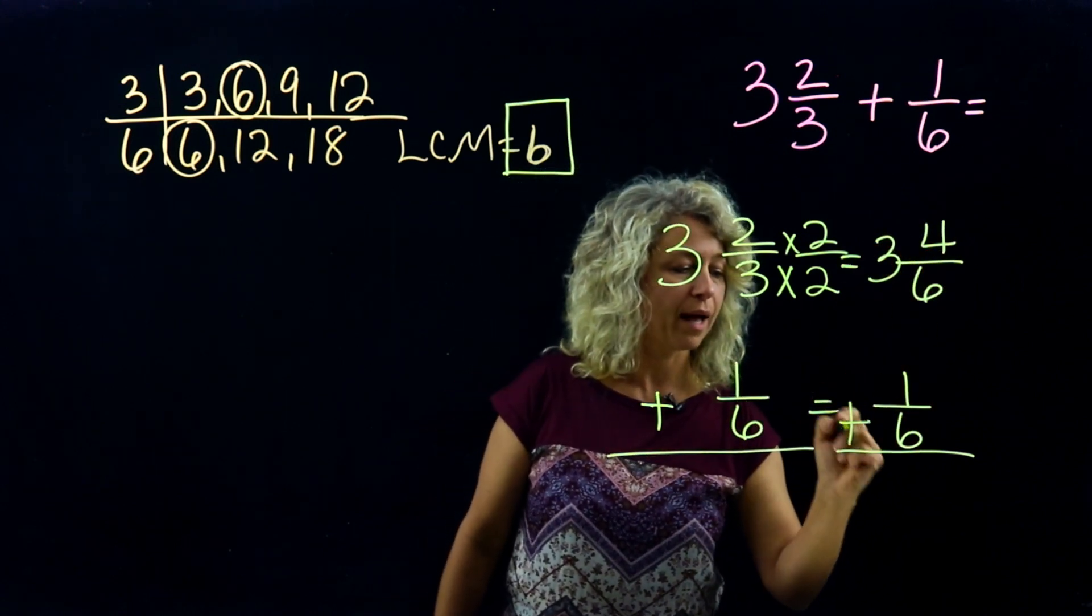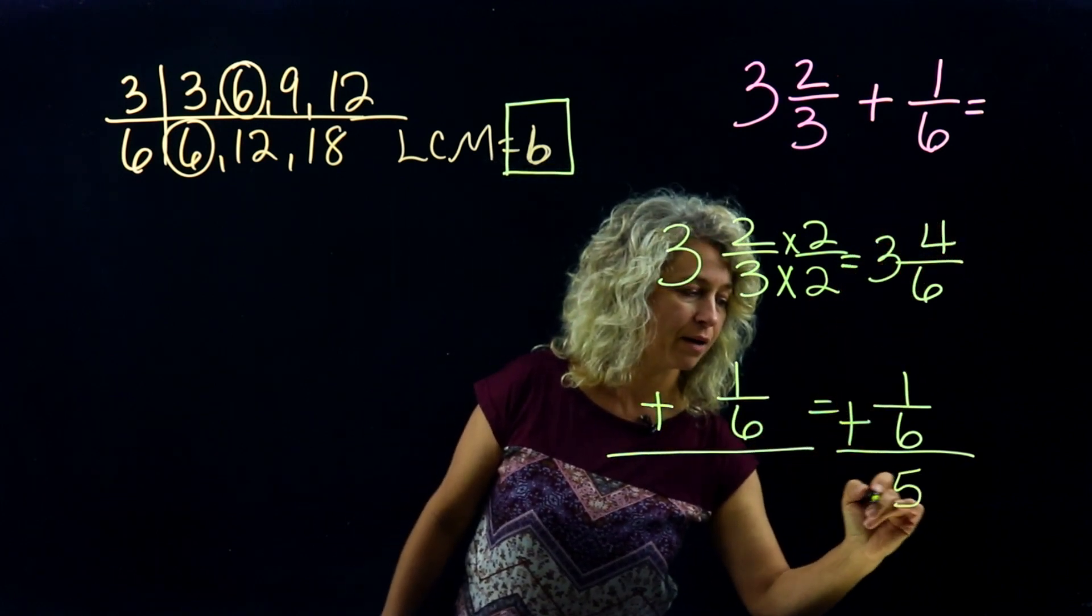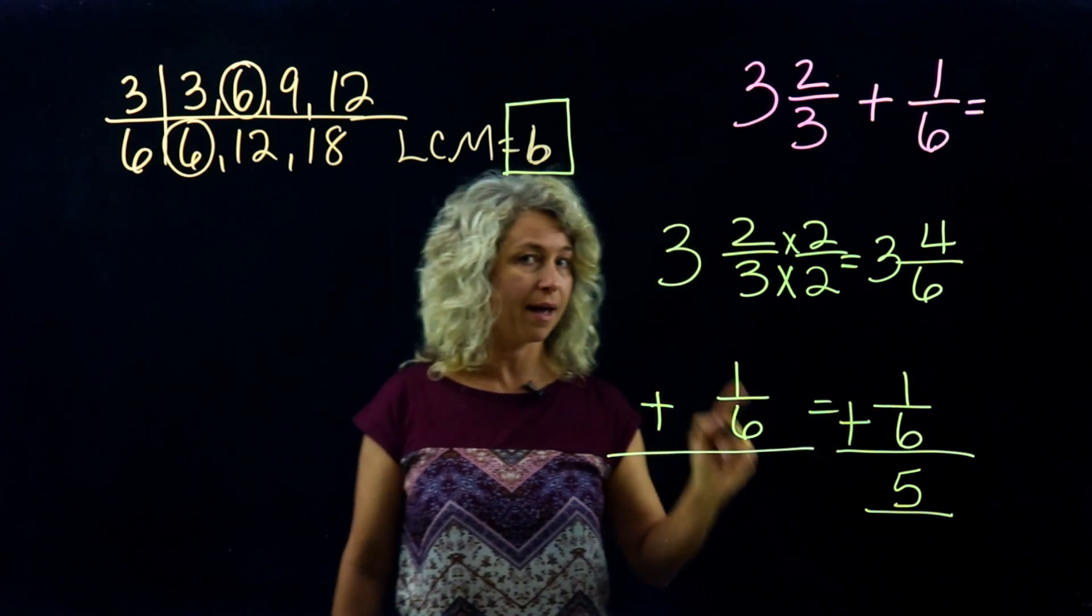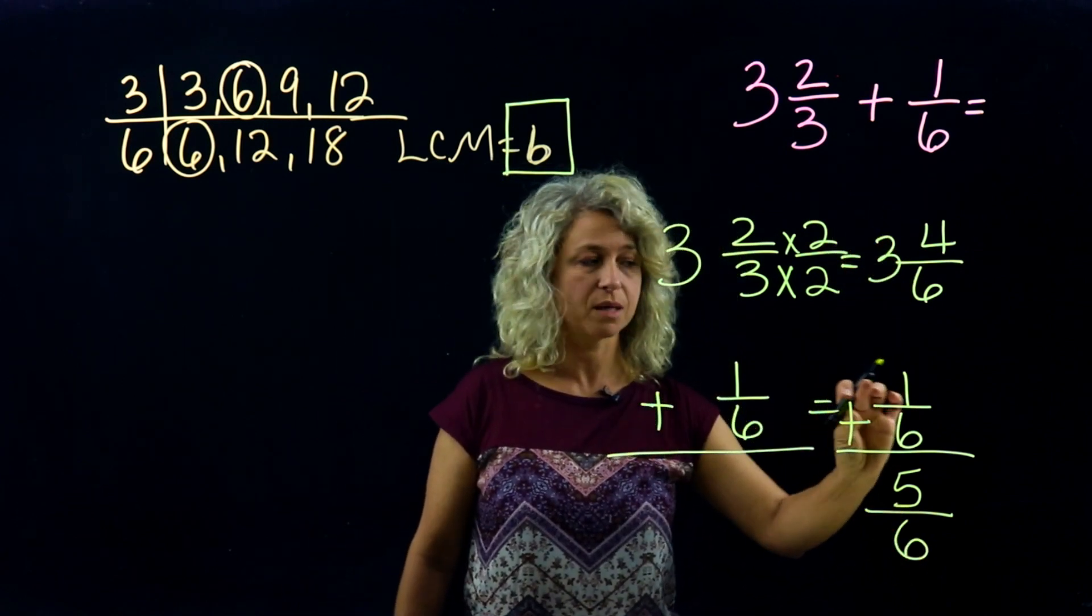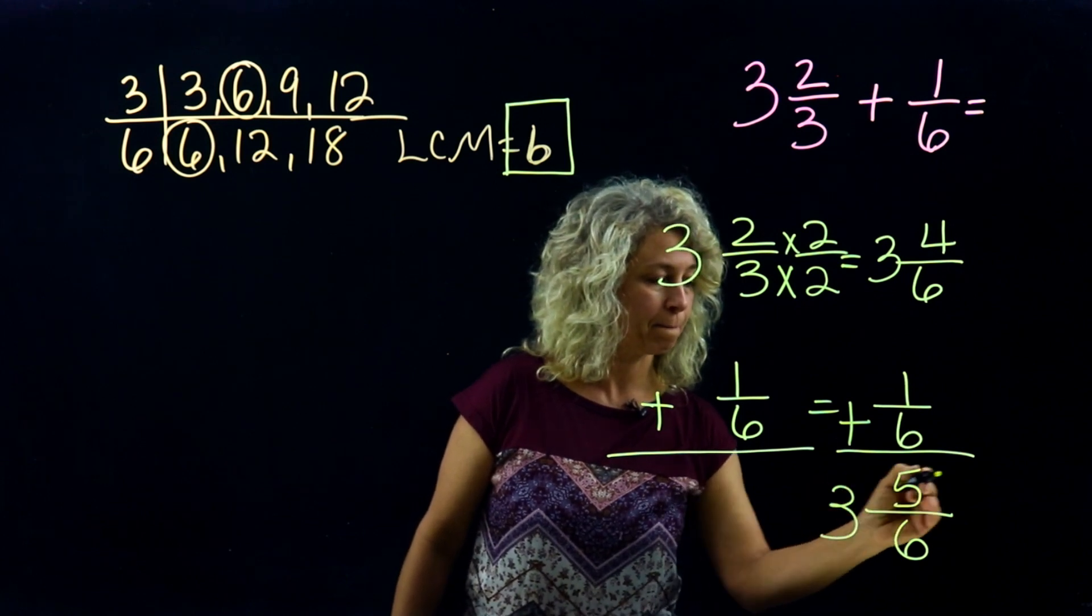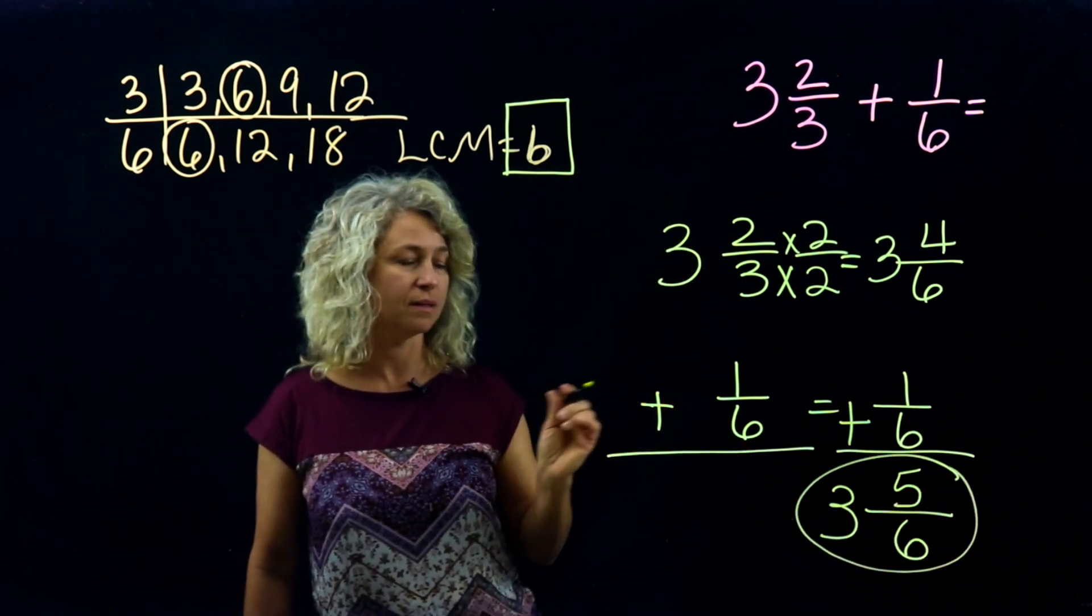Alright, now we are adding. Add your numerators: 4 plus 1 is 5. The denominator stays the same. And 3 plus nothing is 3. Alright, so there you have it.